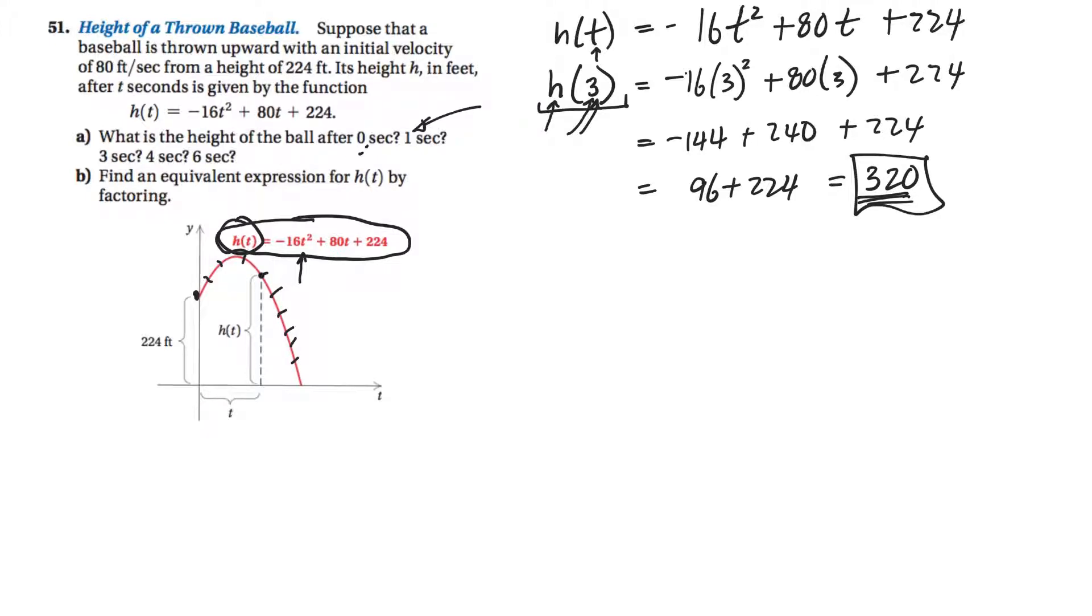And you can figure out the other ones just by plugging those numbers in everywhere for t. And then in letter b, it says find an equivalent expression for h of t by factoring. Okay, so here's our h of t, negative 16t squared plus 80t plus 224. Sometimes we factor just the first two, and that helps us find a vertex of a problem. That tells us where this point is. But here I think that they want us to factor the whole thing.